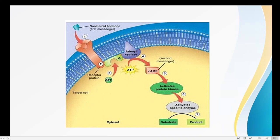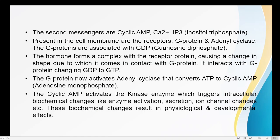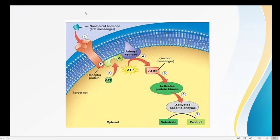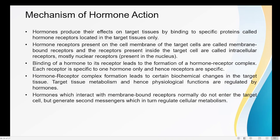On the surface of every cell there are certain regions known as hormone receptors. Hormones attach to these receptors. The receptors present on the cell membrane of the target cell are called membrane-bound receptors, because they are attached to the cell membrane.